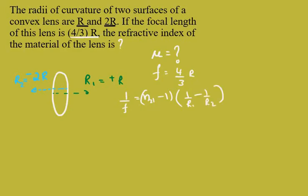Over here F is 4 by 3R. So 1 by 4 by 3R which is equal to n to 1, the refractive index, this is what we need to find out. So n to 1 minus 1, 1 by R, that is 1 by R1 which is R, minus of minus 1 by 2R will come.